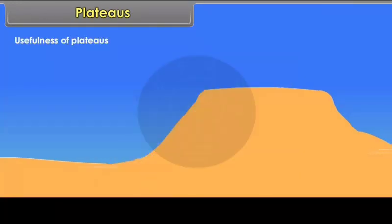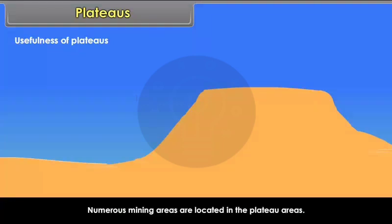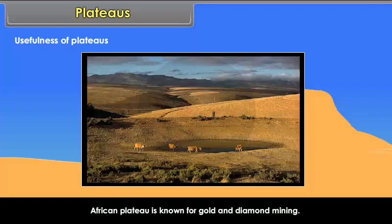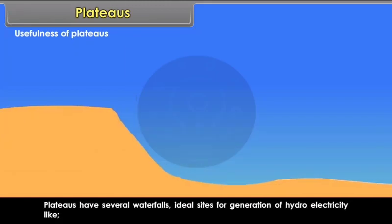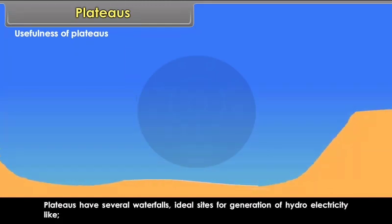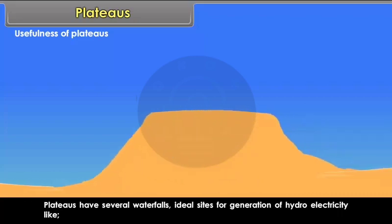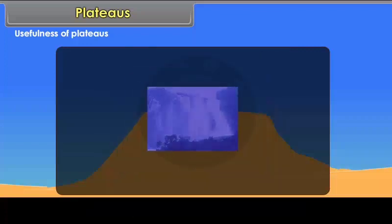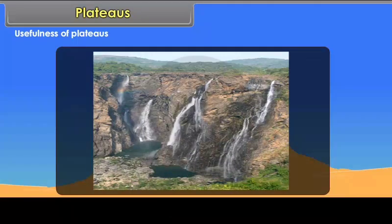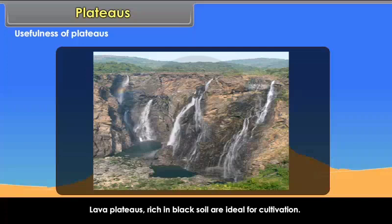Usefulness of Plateaus. Plateaus are rich in mineral resources and deposits, and numerous mining areas are located in plateau regions. The African Plateau is known for gold and diamond mining. The Chota Nagpur Plateau in India is rich in iron ore, coal, and manganese. Plateaus also have several waterfalls that are ideal sites for generation of hydroelectricity, like the Kunru Falls in the Chota Nagpur Plateau on the river Subarnarekha. Lava plateaus, rich in black soil, are ideal for cultivation, and some plateaus are also great attractions for tourists.